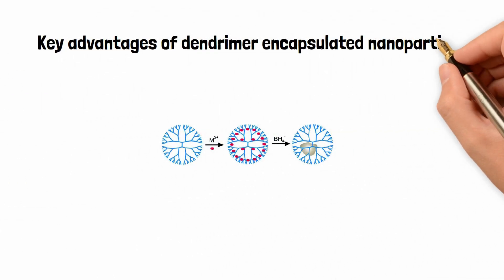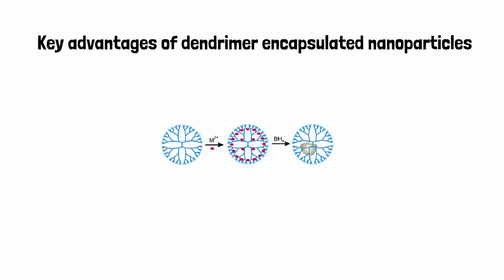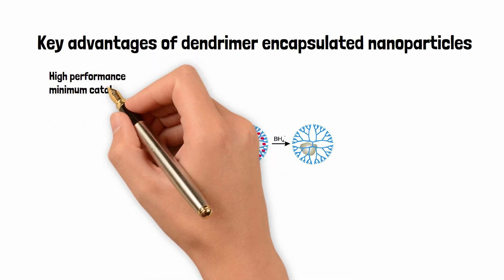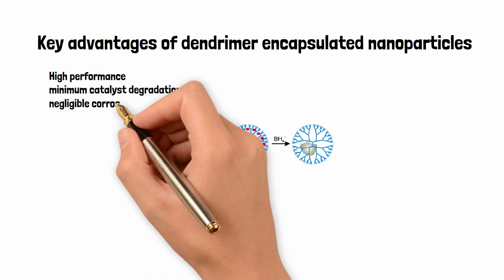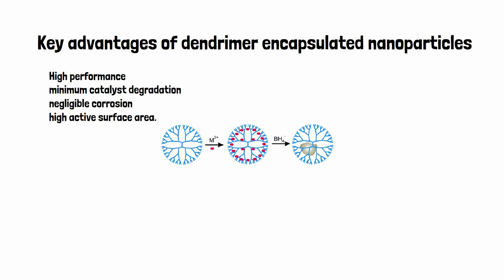There are several key advantages of dendrimer-encapsulated nanoparticles for electrochemical energy applications such as fuel cells, water electrolyzers, and other energy storage systems. 1. High performance, minimum catalyst degradation, and negligible corrosion have been achieved in electrocatalytic reactions (ORR, HER, etc.), mainly with the use of ultra-small metal nanoparticles having high-index facets, high mass-specific activity, controlled size and shape, and high active surface area.